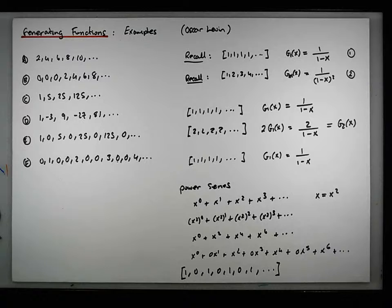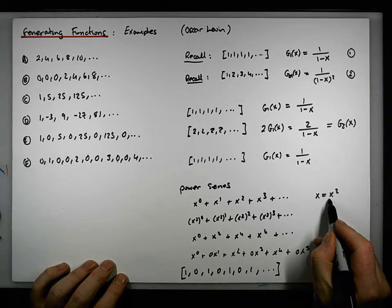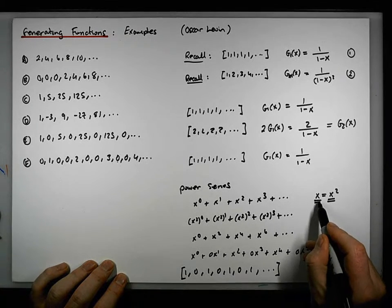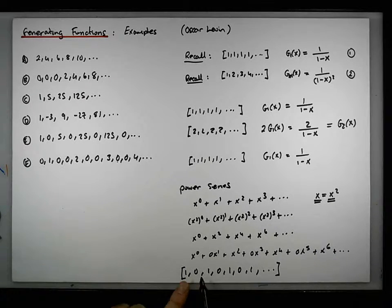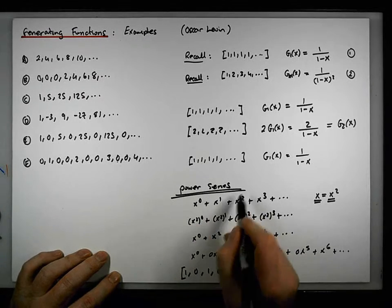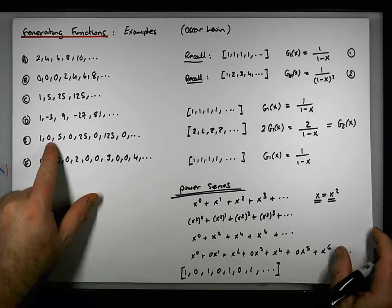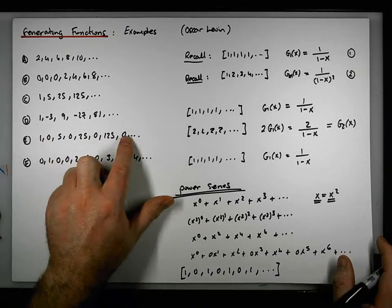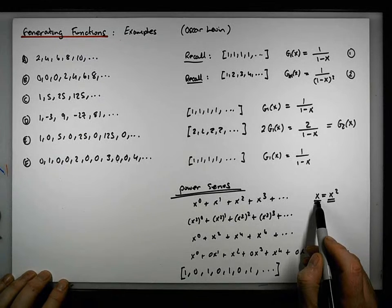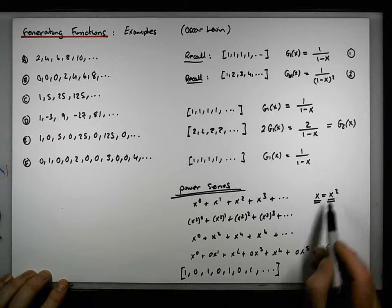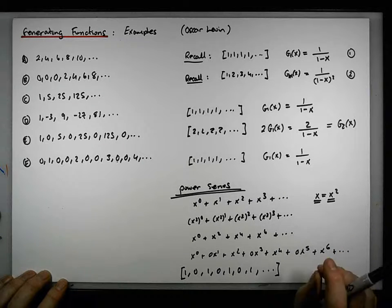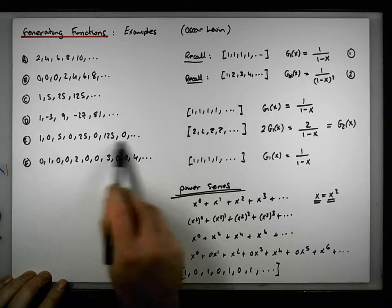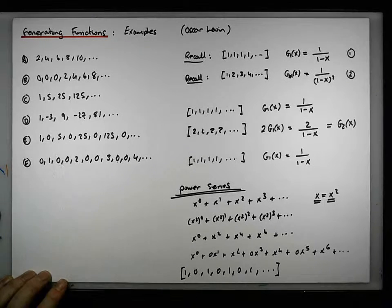My point here is that when we make a substitution into a known sequence — when we substitute x² in for the indeterminate x — the effect is to introduce a zero between each term in the sequence. Keep that in mind; that's an important observation. So if you want to introduce a single zero into a sequence, just swap out the x's in the power series for x squareds, which means swapping the x's in the generating function for x squareds, and we end up with a sequence that alternates between terms with a zero between them.